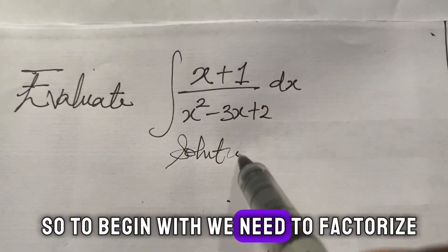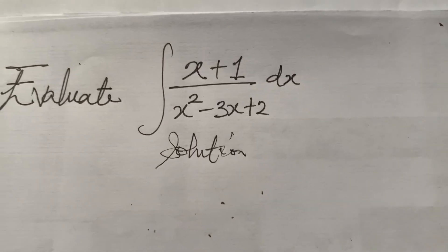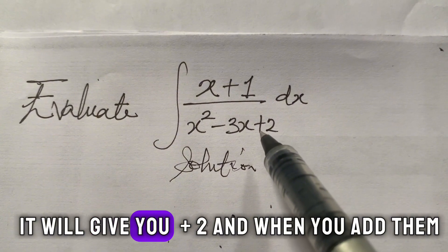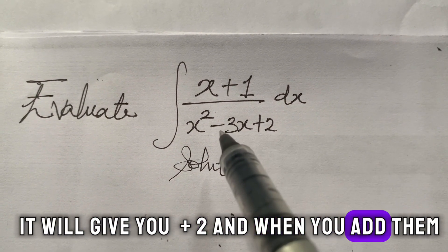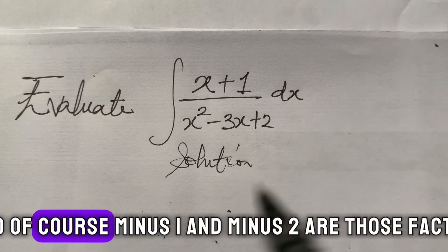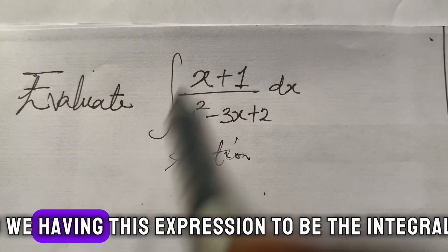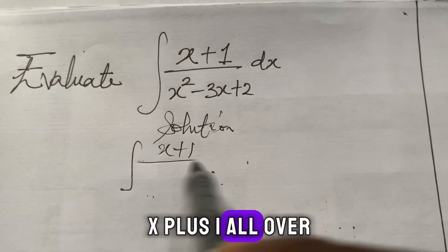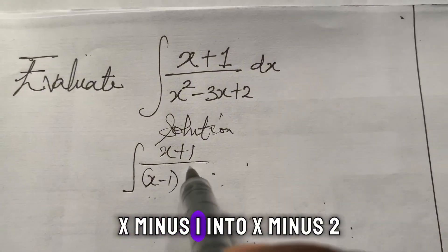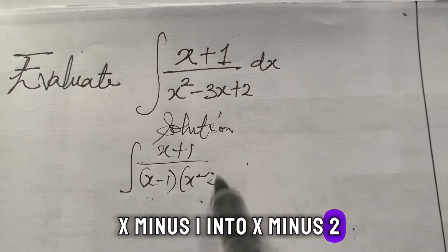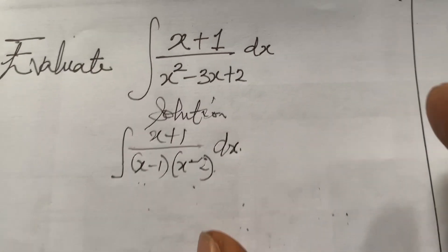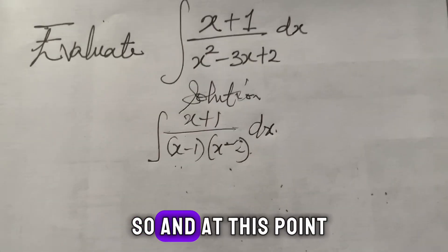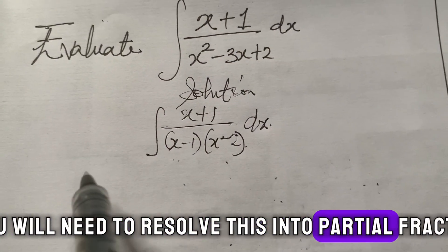To begin, we need to factorize. We look for two numbers that when multiplied give positive two and when added give minus three. Those factors are minus one and minus two. So the expression becomes the integral of (x + 1) all over (x − 1)(x − 2) with respect to x. At this point, we need to resolve this into partial fractions.